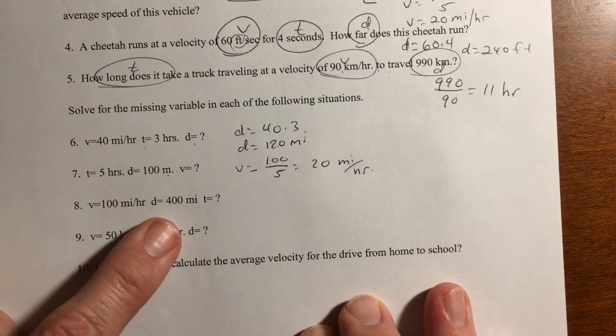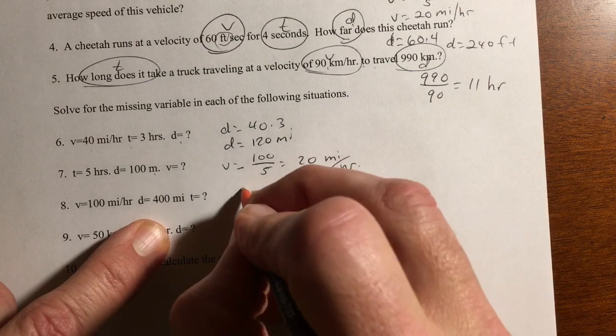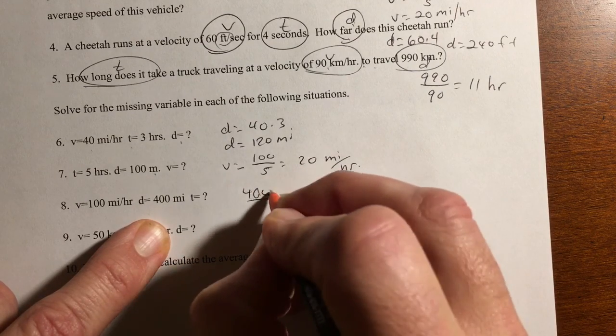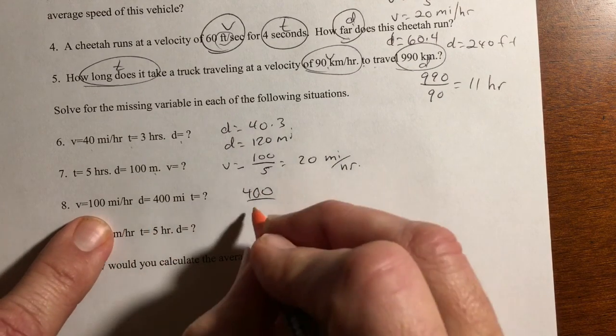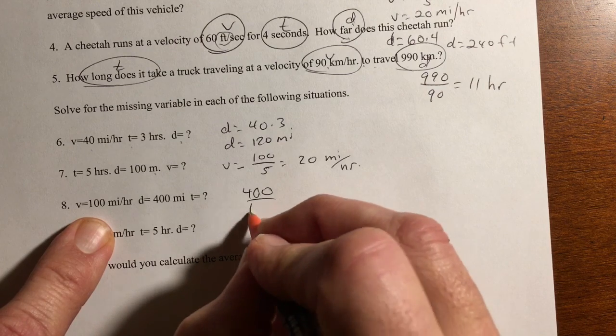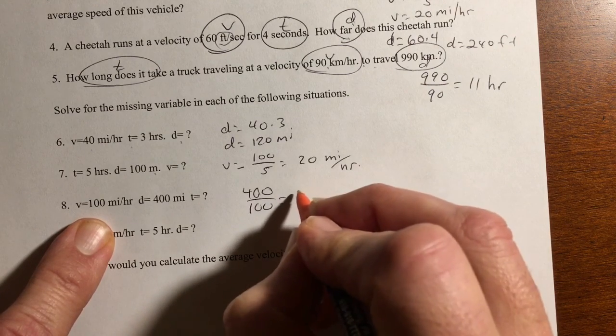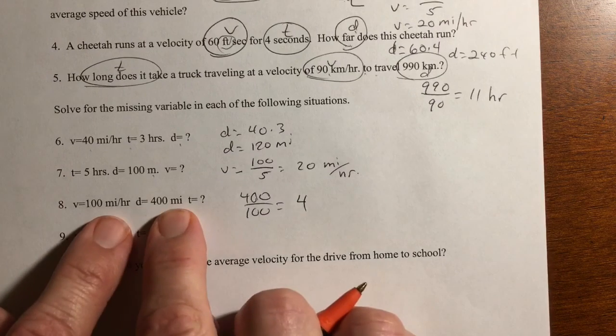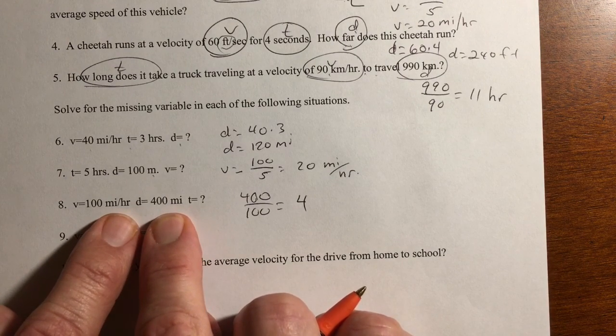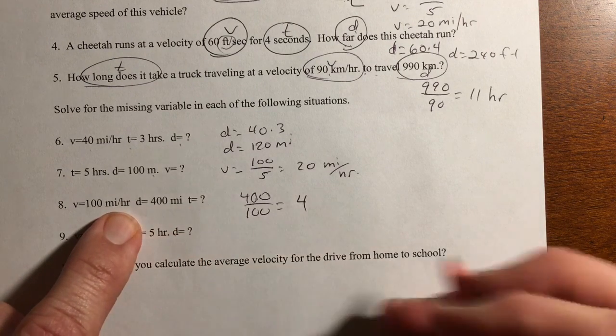Number eight. Here's my velocity. And this is one times time. It's this one again, D divided by V. So it's 400 divided by 100. That equals 4. Again, the time here is going to be hours when you look at the units.